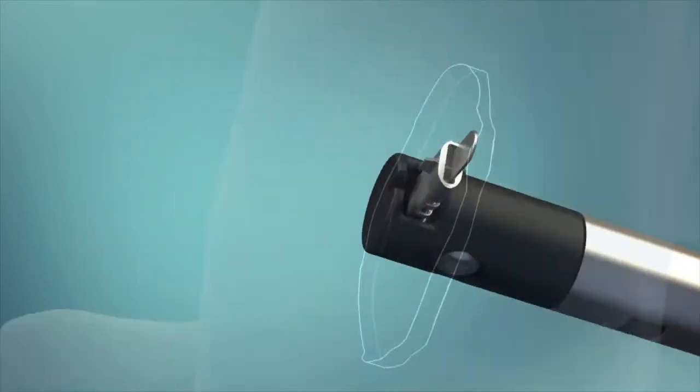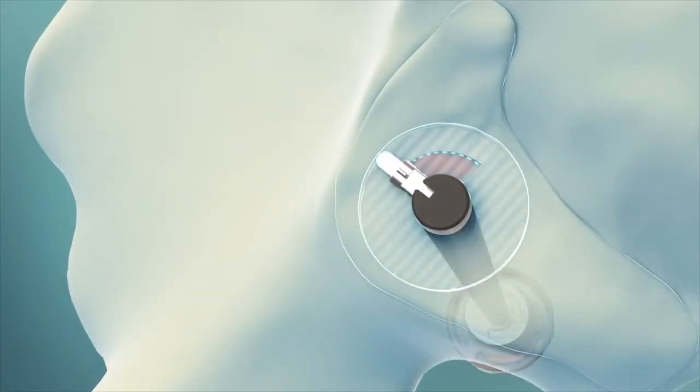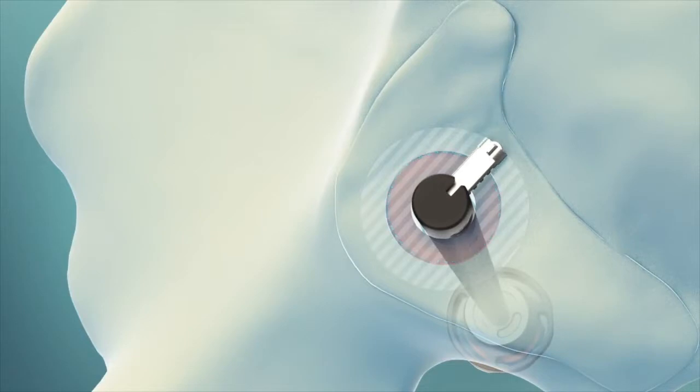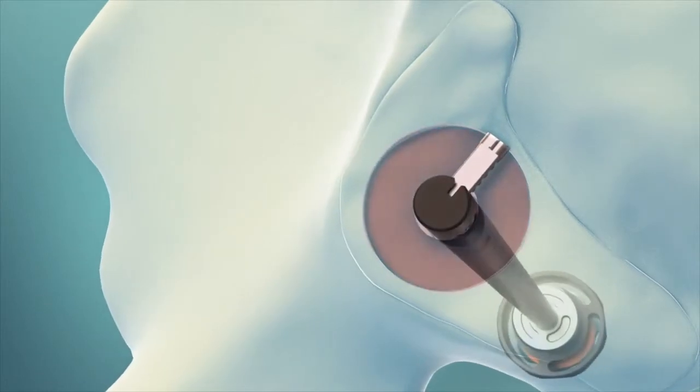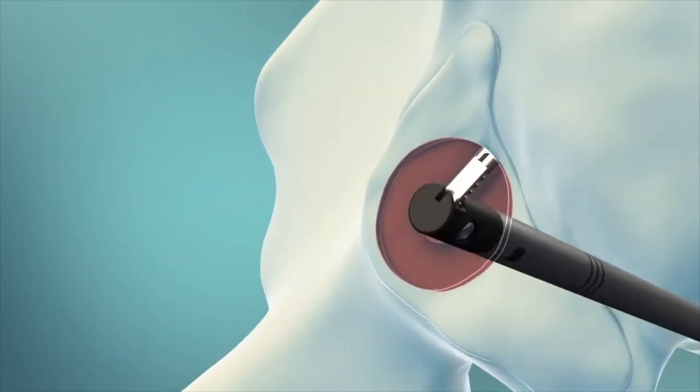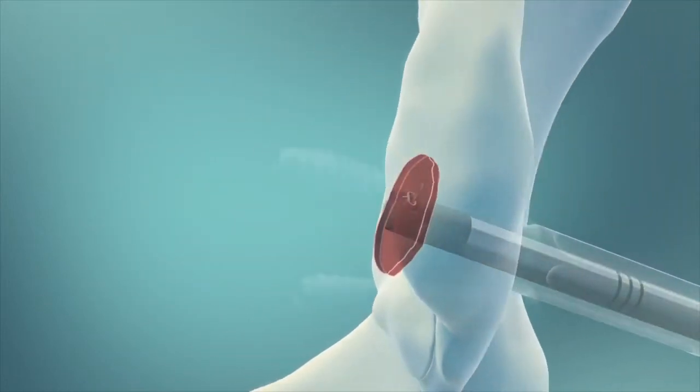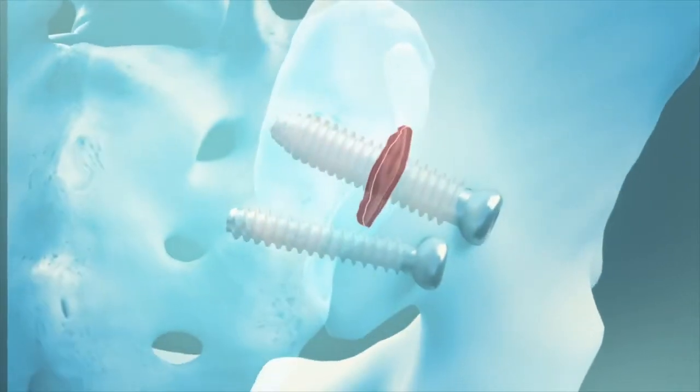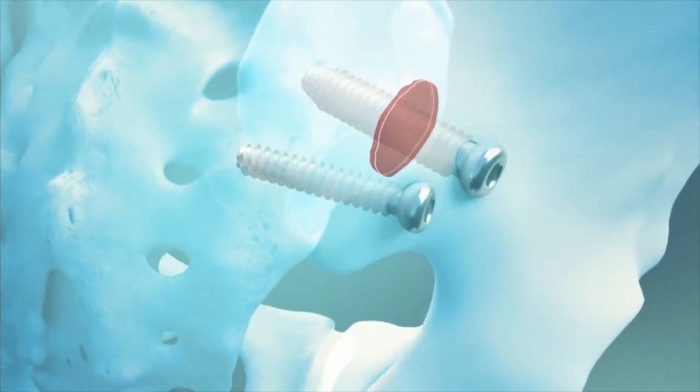The key is the Symmetry decorticator, which removes cartilage and decorticates the articulating joint surfaces. The cavity created allows placement of bone graft. The result is a true SI joint arthrodesis and the best possibility of relief for your patients.